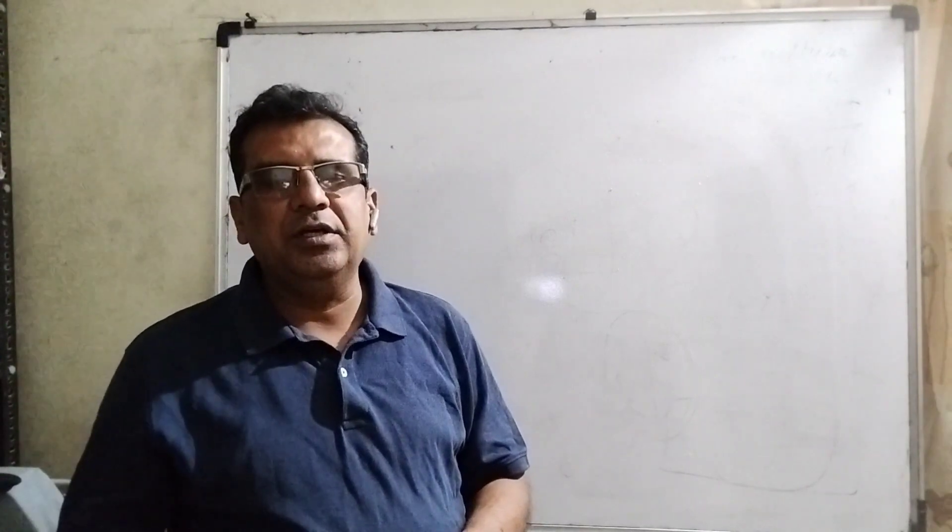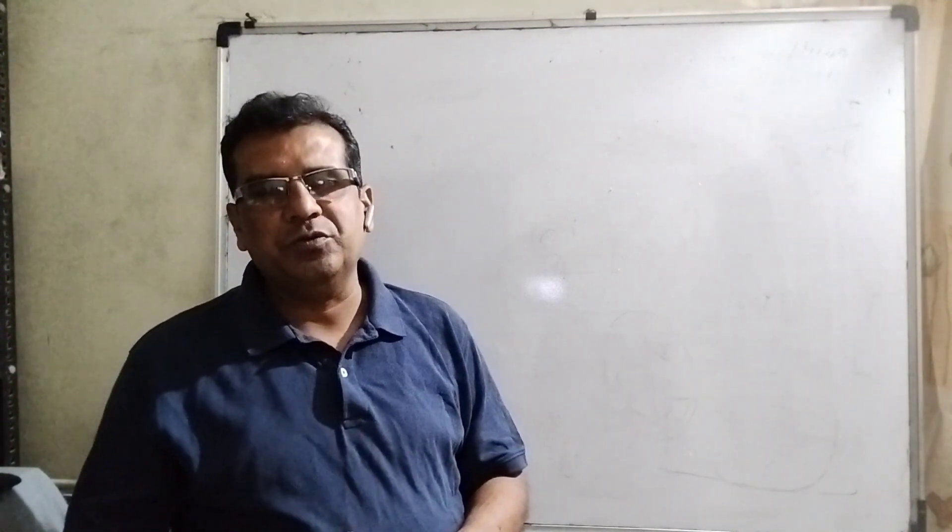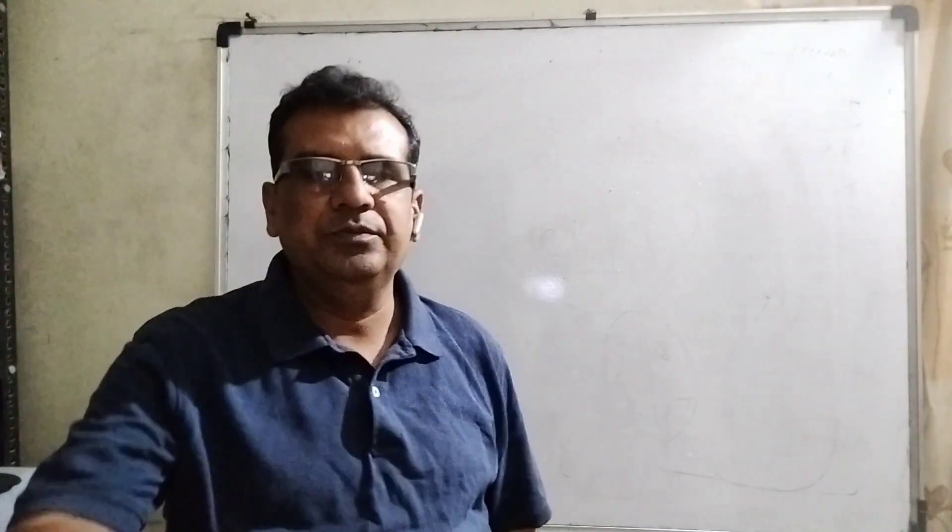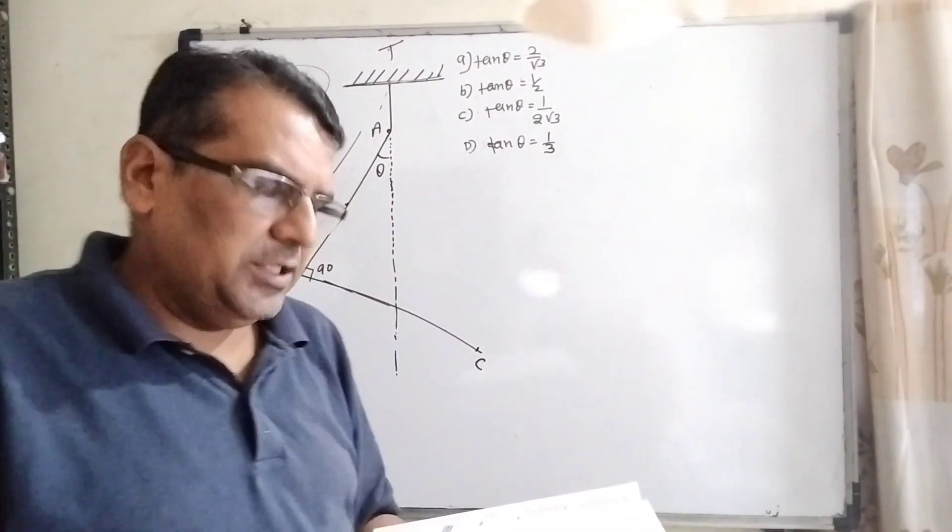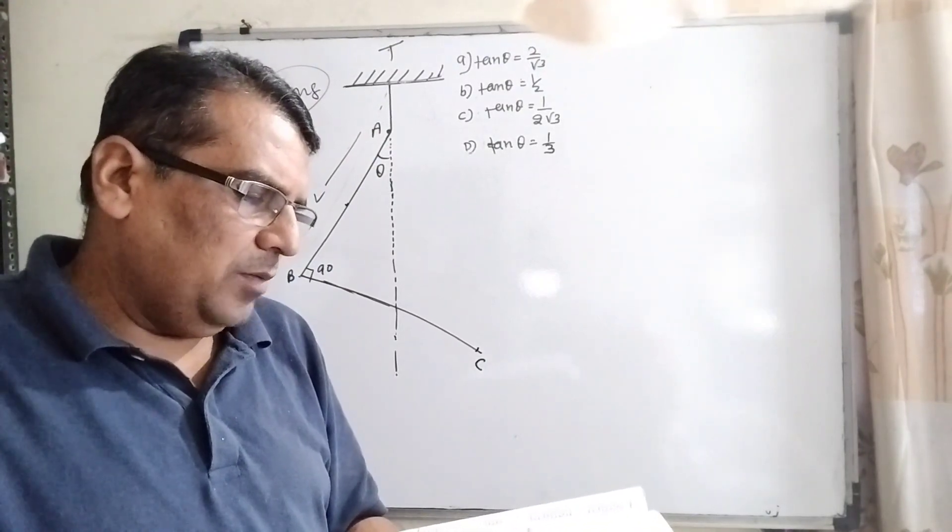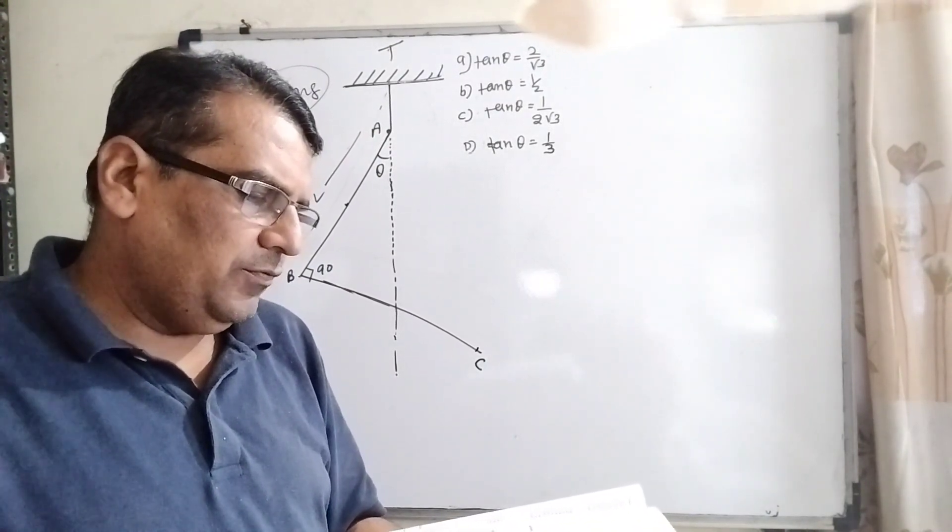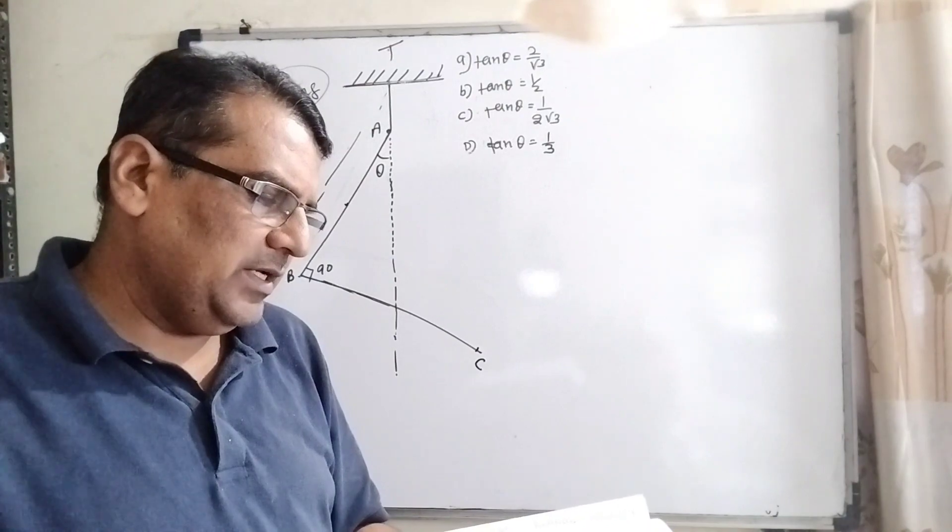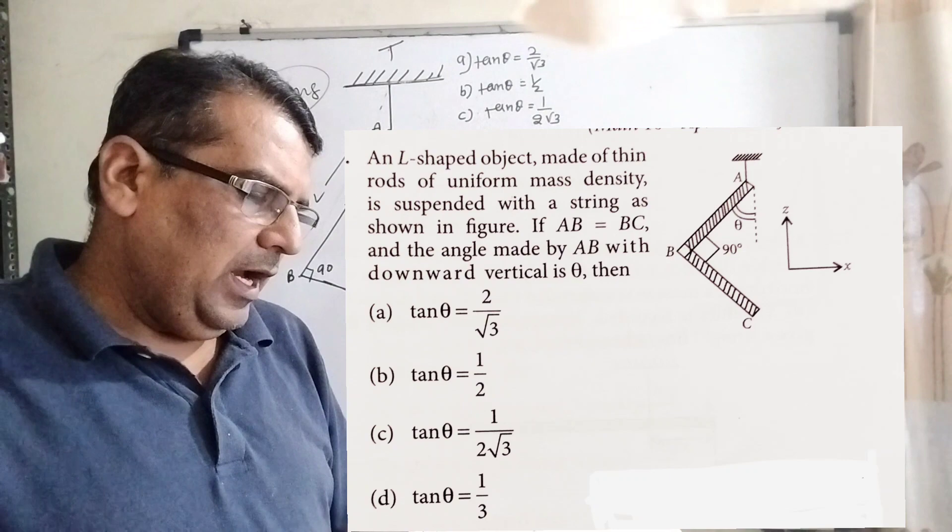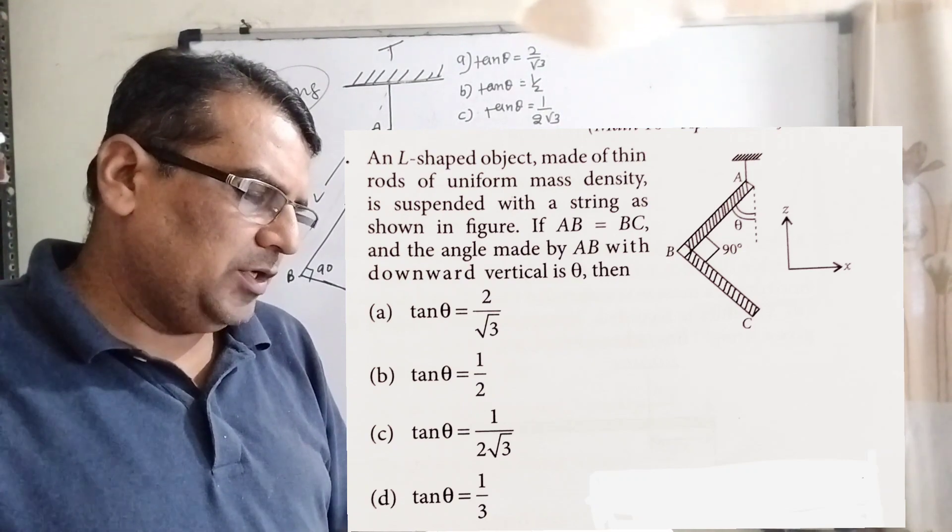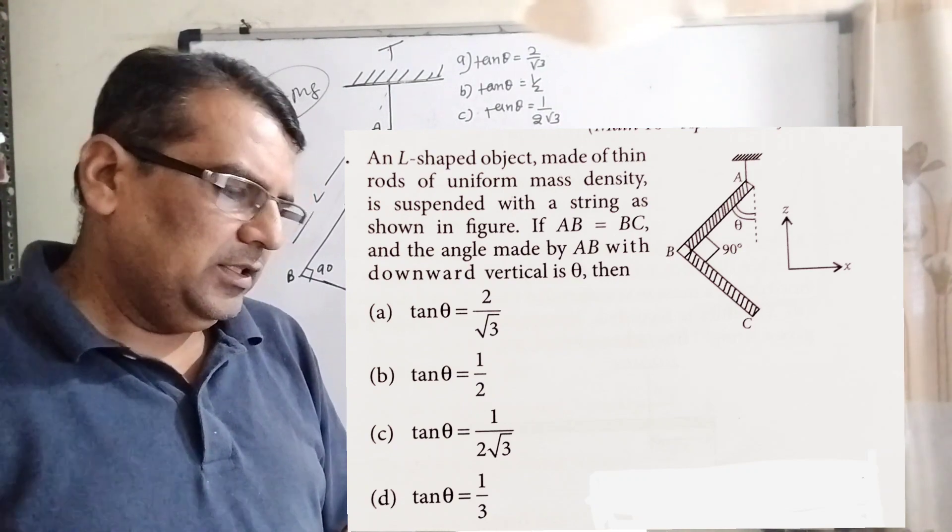And along with, please like, share and subscribe my channel that can reach more and more students. Thank you, let's move on. What the question says: an L-shaped object made of thin rods of uniform mass density is suspended with a string as shown in figure. If AB equal to BC and the angle made by AB with downward vertical is theta, then